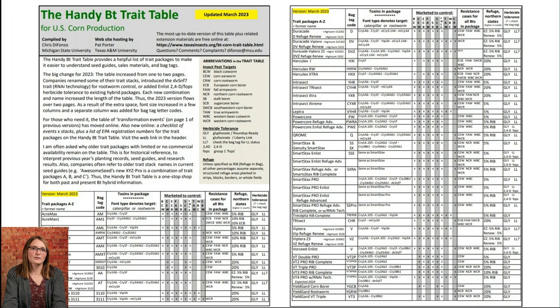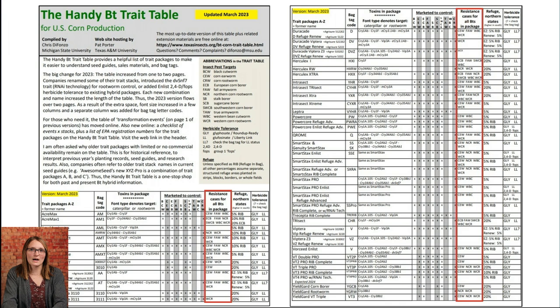I wanted to plug the handy BT trait table, which is updated every year — the last update was March 2023. I really like this because it tells you all of the BT trait packages that are out there right now and has a column that tells you if resistance has been identified for each particular pest to all of the traits available in that package. I recommend for any field with corn rootworm to check the handy BT trait table, see what traits are in the corn you're planting, and see if there's ever been a case of resistance recorded for that particular pest.